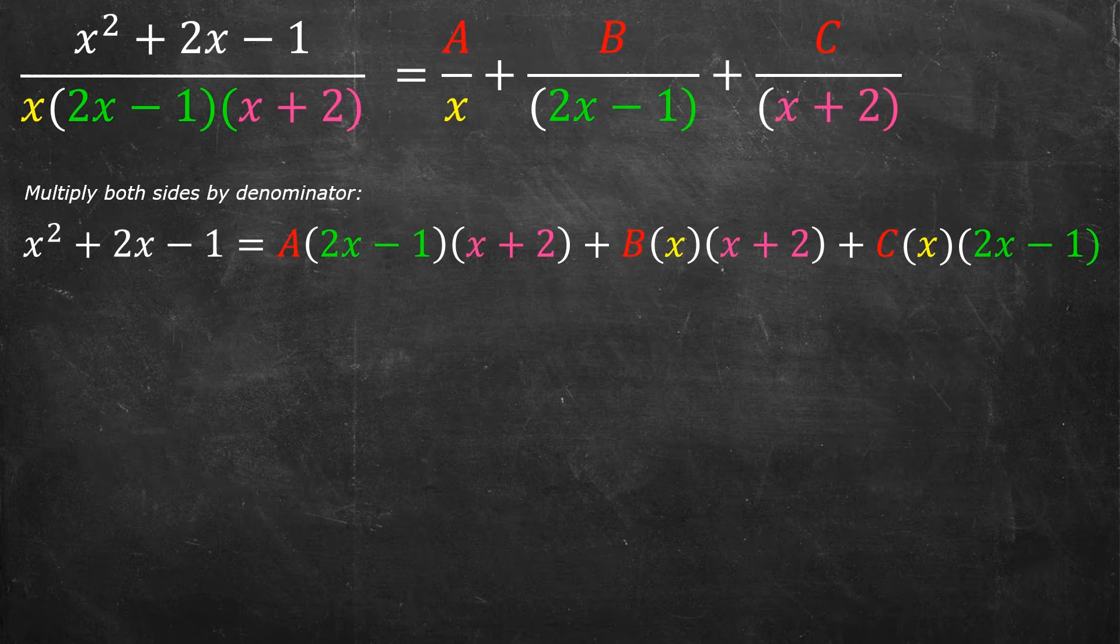But the basic idea is that for the a over x term, when I multiply by the denominator, the x cancels, and I'm left with a multiplication of 2x minus 1 and x plus 2. For the b term, the 2x minus 1 goes away. When I multiply by the denominator, I'm left with an x and an x plus 2. And for the c term, it's x and 2x minus 1.